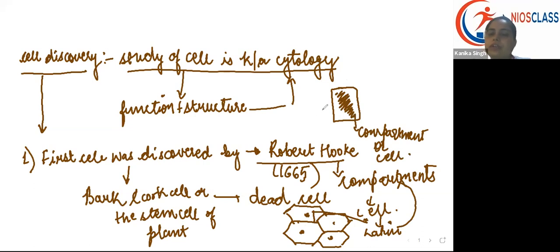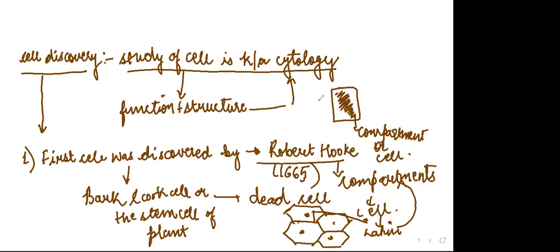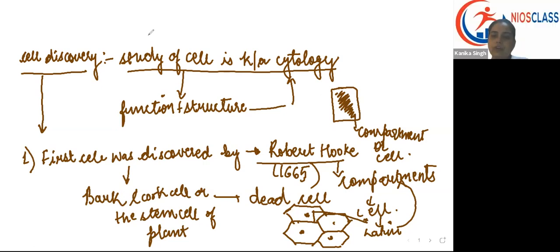Do you have any doubt till here about the discovery done by the three scientists? You can type it, Ankit, because you are not audible to me right now. If you have any doubt or want me to repeat things, I will repeat it for you, but you have to type it. The next point is about the cell theory. Afterwards when they discovered the cell, scientists thought about the characteristics of the cell. So they felt they should formulate a cell theory — basic things that define a cell.